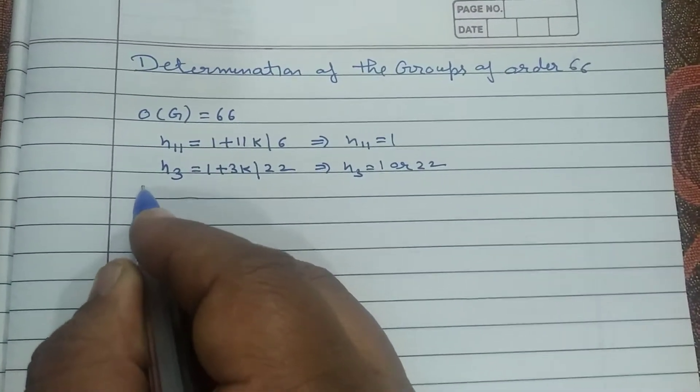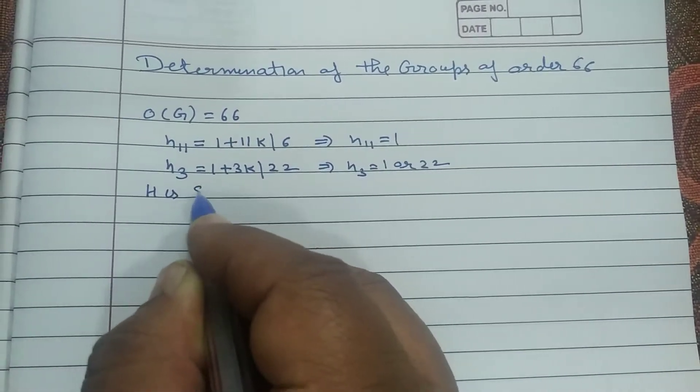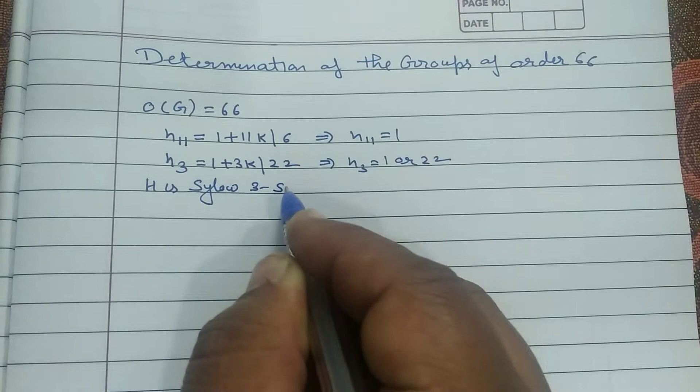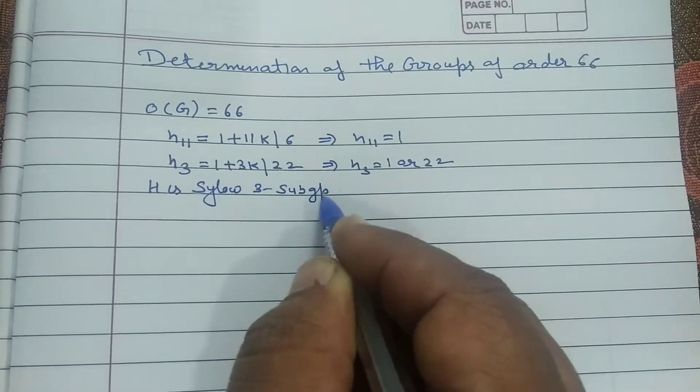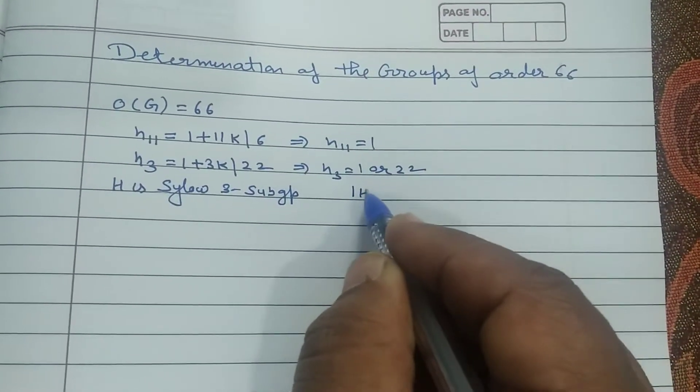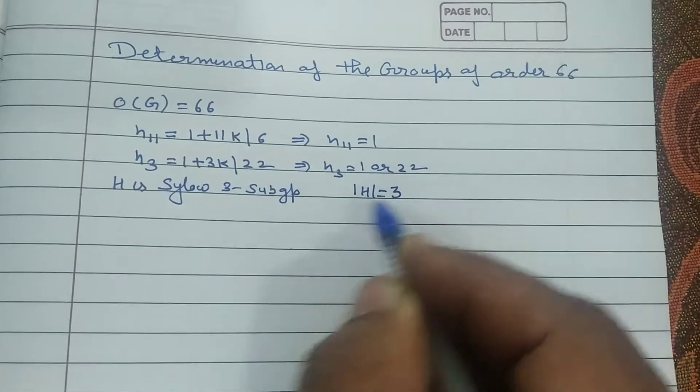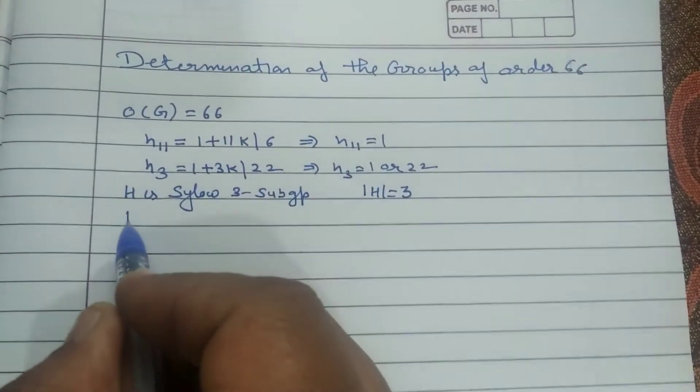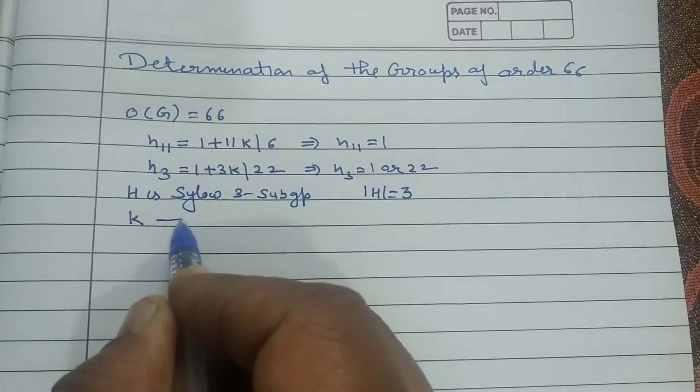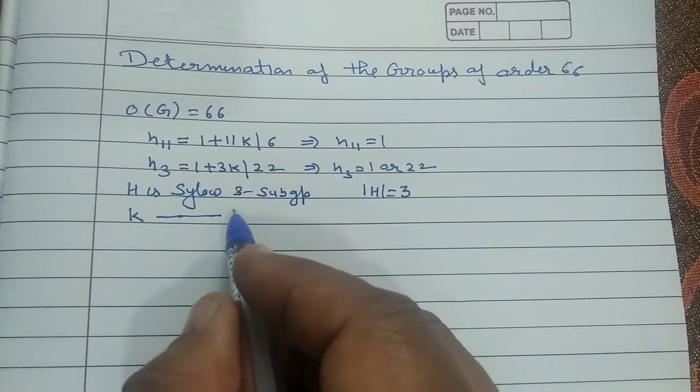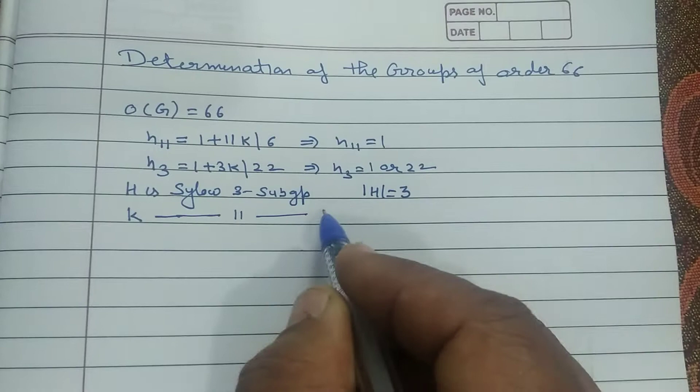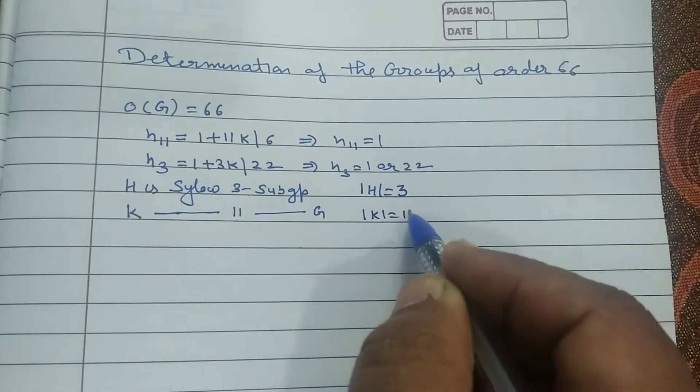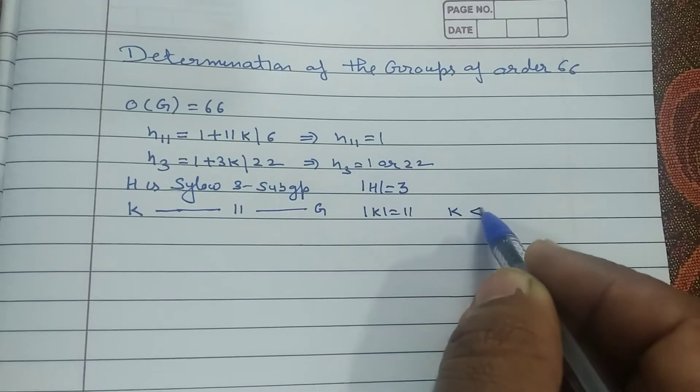Assume that H is a Sylow 3 subgroup. Its order is 3, but it is not guaranteed that it is normal subgroup. K is Sylow 11 subgroup of G. Its order is 11 hai, or guarantee hai this is normal subgroup of G.